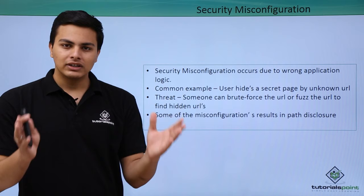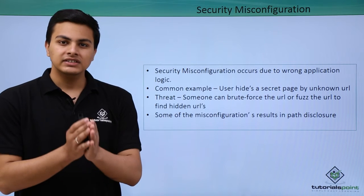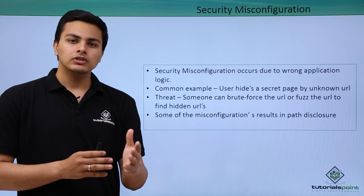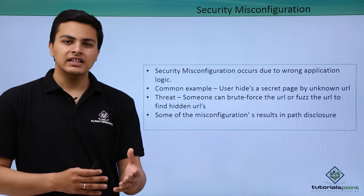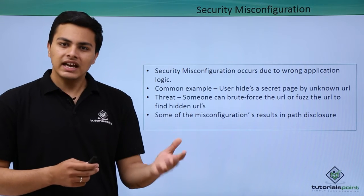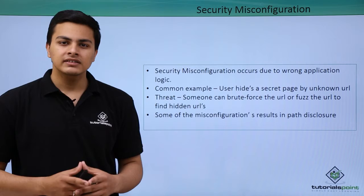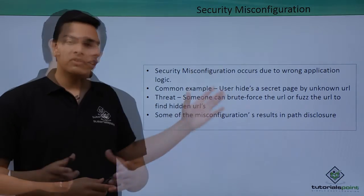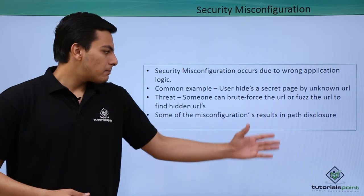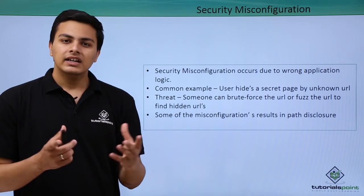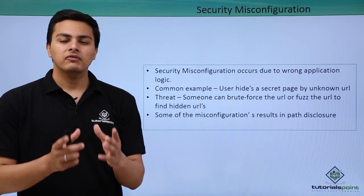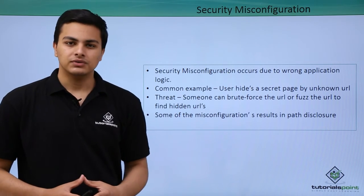The threat here is that someone can brute force or fuzz the web application URLs in order to find some interesting URLs. If they are able to find those hidden URLs, that results in security misconfiguration issues. Some misconfigurations also result in path disclosures or even directory traversal attacks. Let's have a look at an example of security misconfiguration issues.